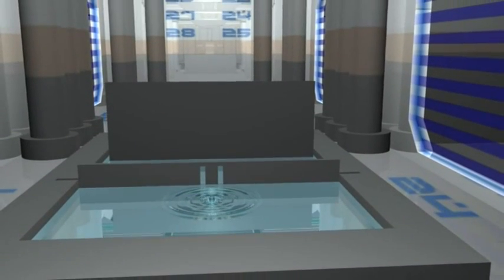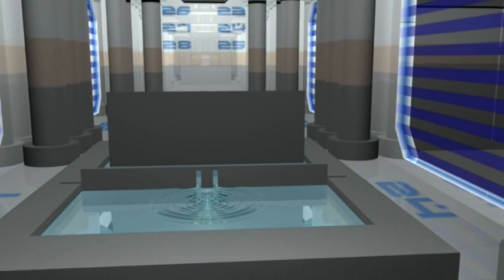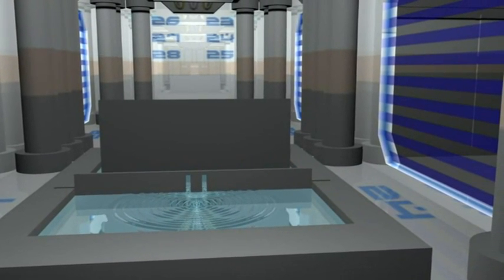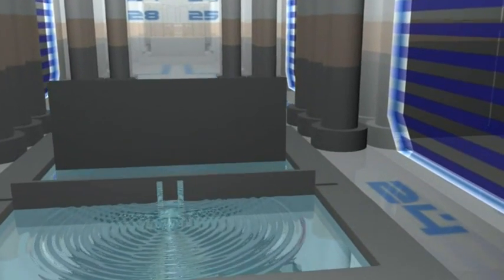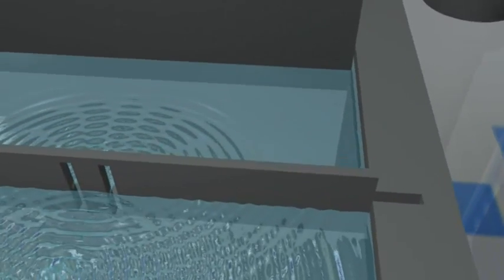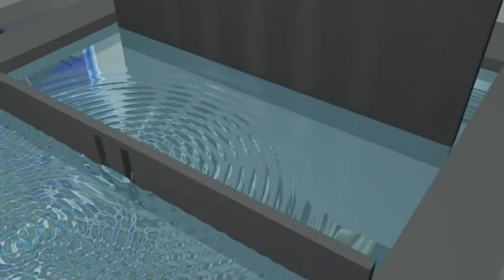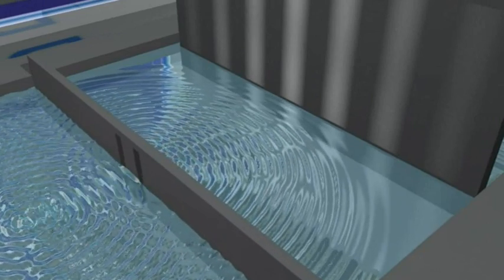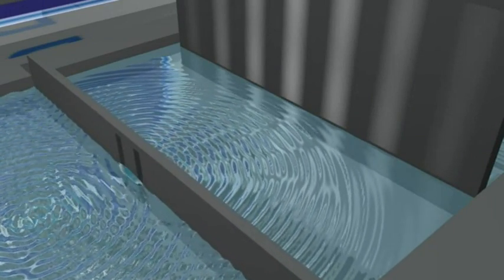But when we add the second slit, something different happens. If the top of one wave meets the bottom of another wave, they cancel each other out. So now, there is an interference pattern on the back wall. Places where the two tops meet are the highest intensity, the bright lines, and where they cancel, there is nothing.